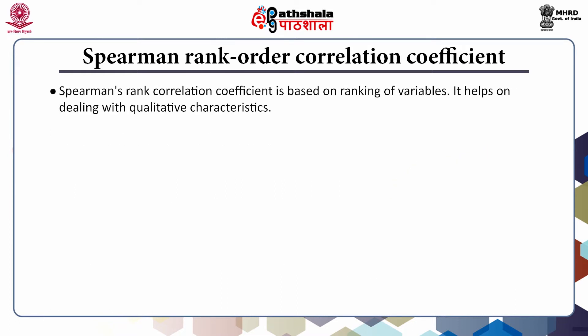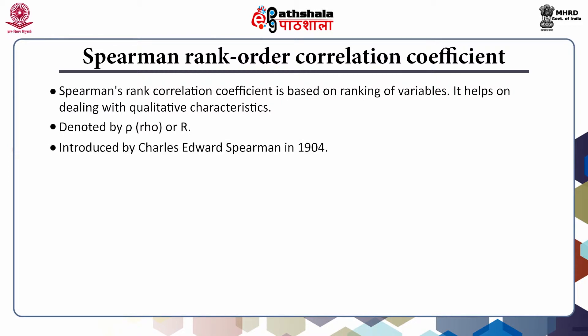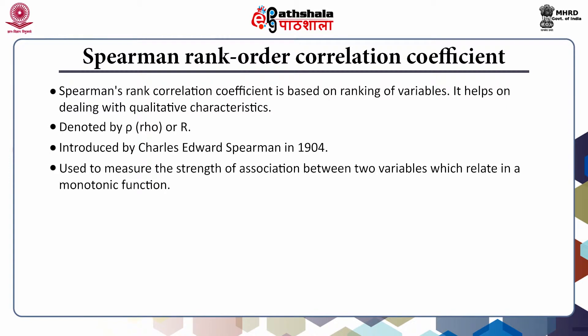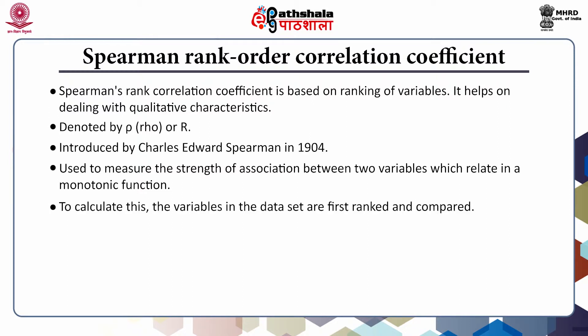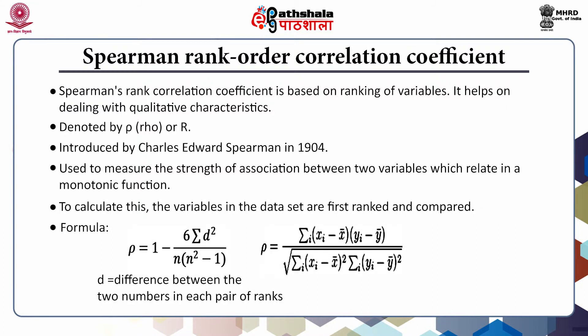Spearman's rank correlation coefficient is based on ranking of variables. It helps in dealing with qualitative characteristics. It is denoted by rho or r, and was introduced by Charles Edward Spearman in 1904. It is used to measure the strength of association between two variables which relate in a monotonic function. To calculate this, variables in the data set are first ranked and compared. The Spearman's rank correlation coefficient is obtained by the formula provided below.